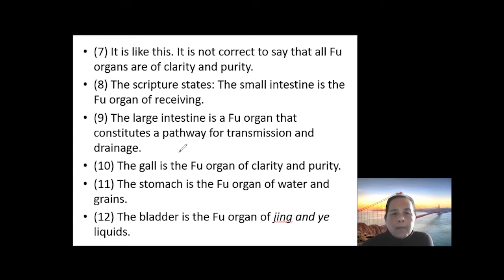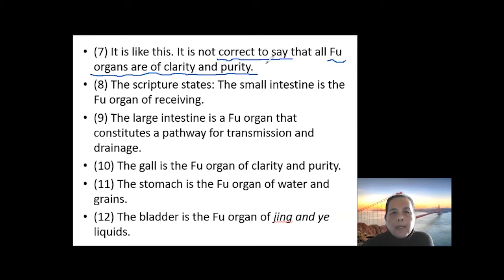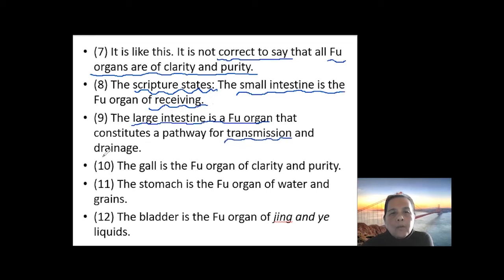Then some explanations here. The premise of the question — that all fu organs should be clear and pure — is not right. So basically the question itself is not correct. The Huang Di Nei Jing says: the small intestine is the fu organ of receiving; the large intestine is the fu organ of transmission and also draining.